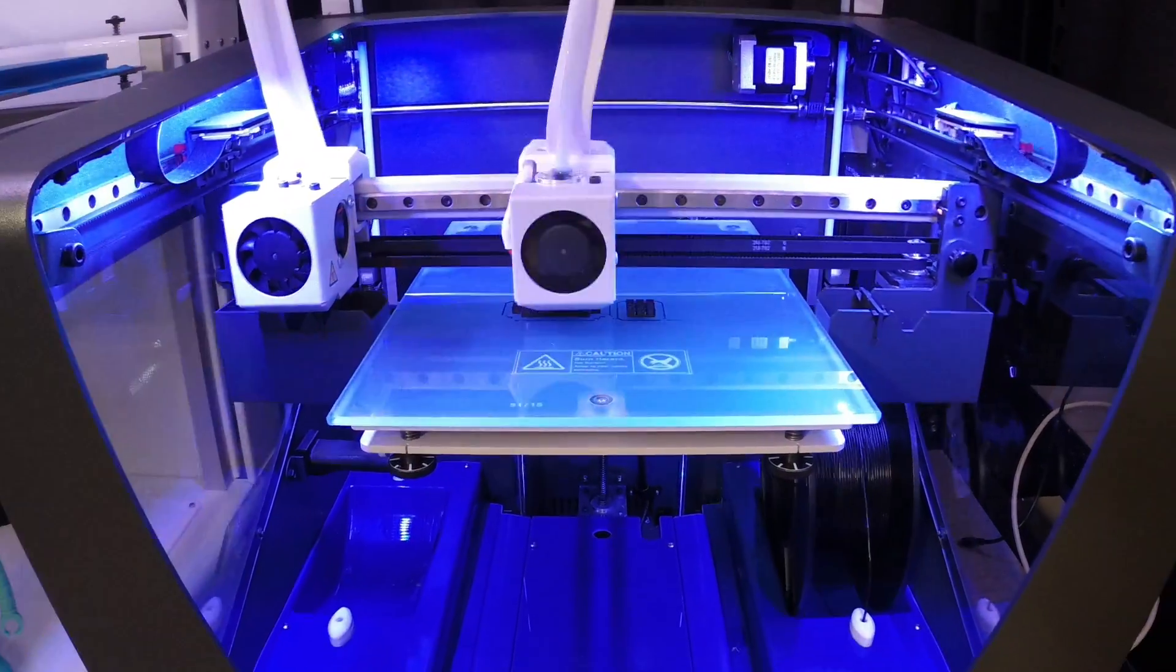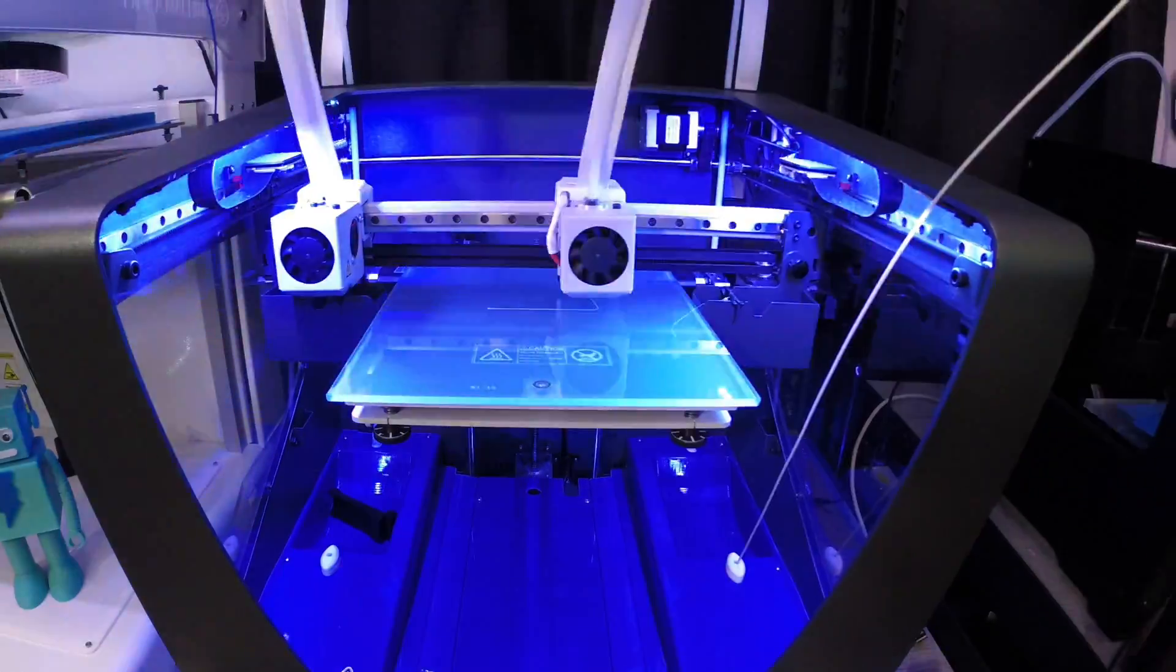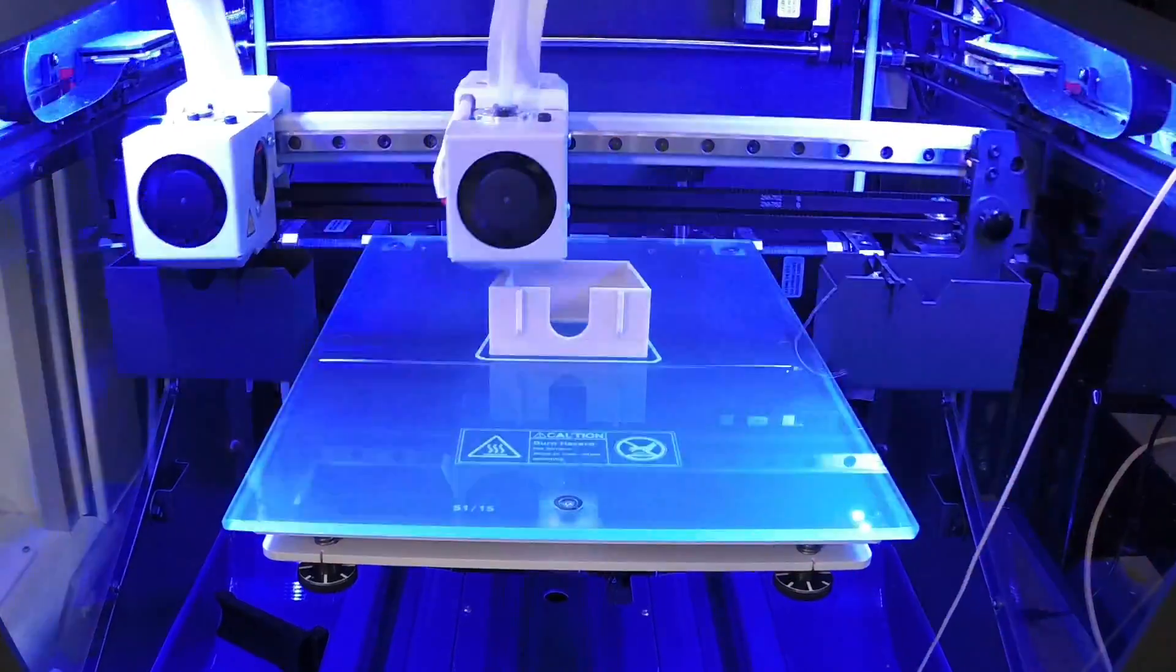To build the enclosure you can 3D print the files yourself or have a service like 3dhubs.com print them for you. We 3D printed the parts on a Sigma 3D printer from BCN3D.